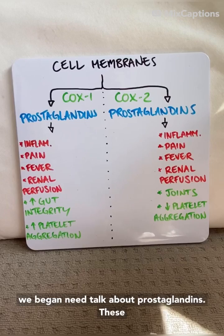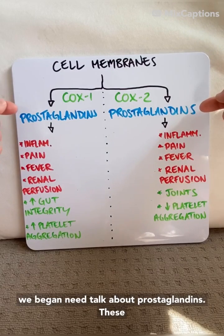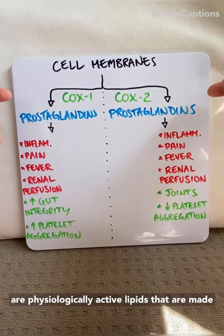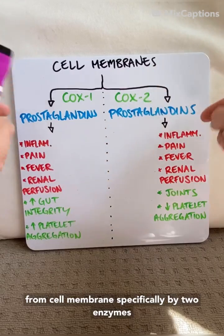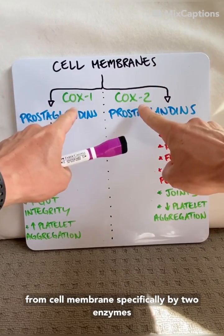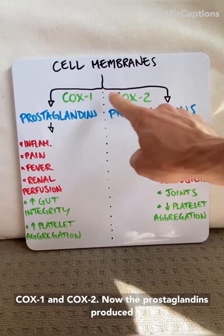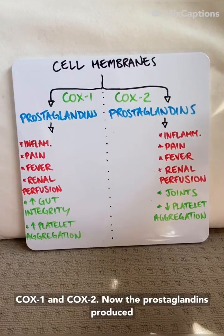Before we begin, we need to talk about prostaglandins. These are physiologically active lipids that are made from cell membranes, specifically by two enzymes, COX-1 and COX-2.